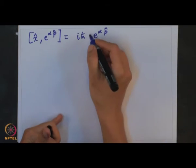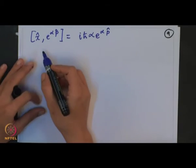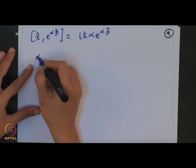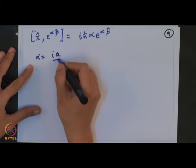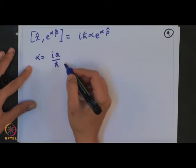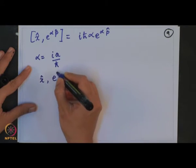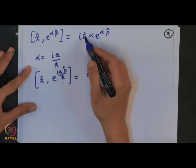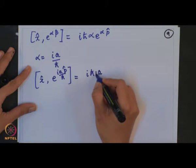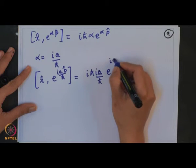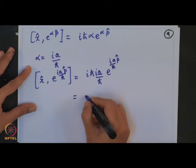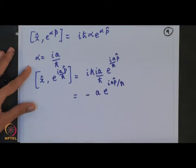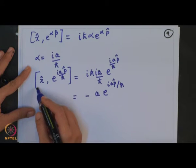I had missed the alpha factor which I put back here. So this is the expression for the commutator [x̂, e^(αp̂)]. Now if I replace α by (ia/ℏ), then [x̂, e^(iap̂/ℏ)] will be iℏ·(ia/ℏ)·e^(iap̂/ℏ), which gives −a·e^(iap̂/ℏ). So this is what I obtain after finding the commutator of these 2 operators.